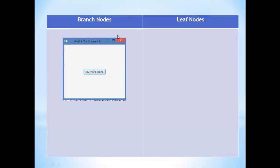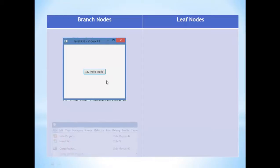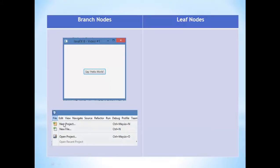Some examples of a branch node will be, for example, our root node. Inside the root node you can place other components, such as a button, a menu, or maybe another shape. A menu is also a branch node because you can place a submenu inside of it.